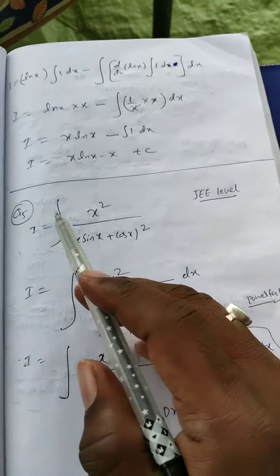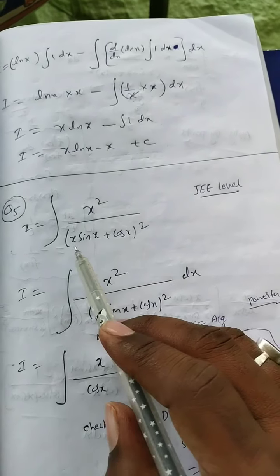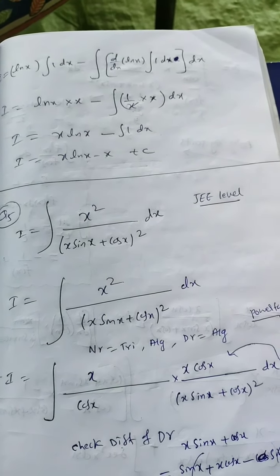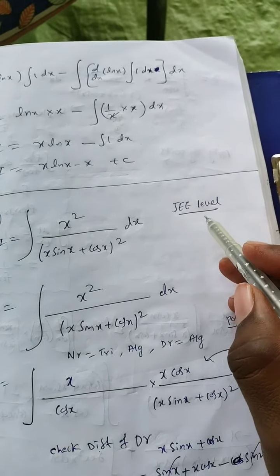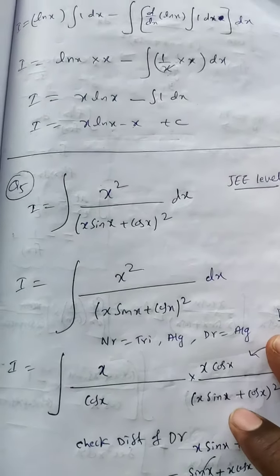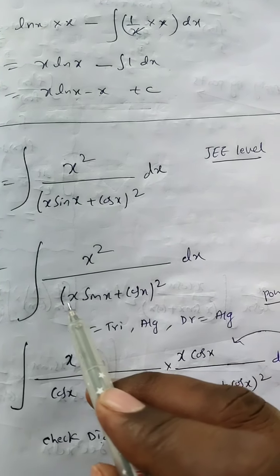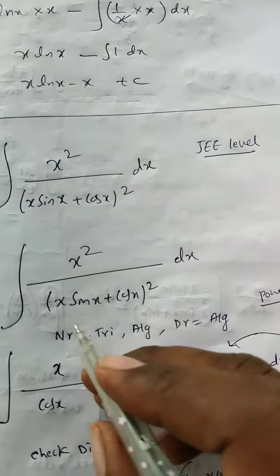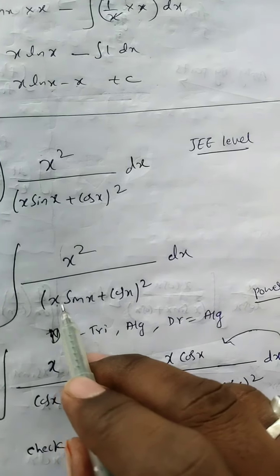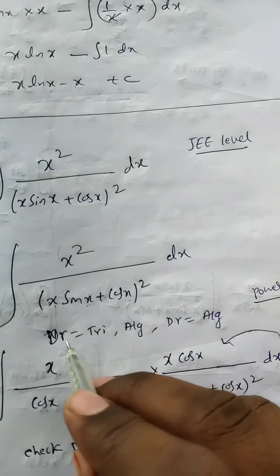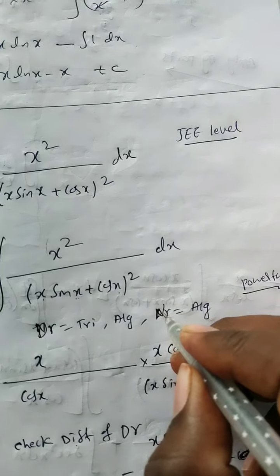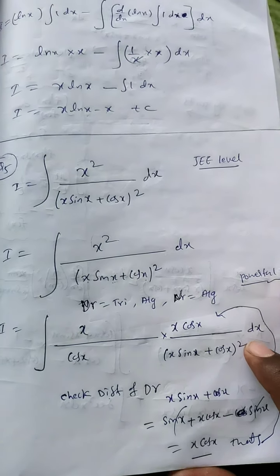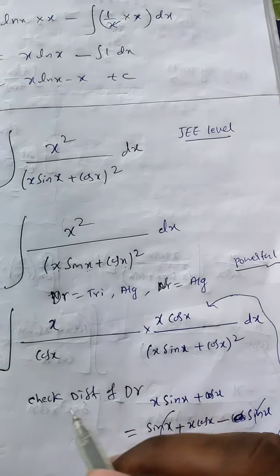Dear students, let us see the next question: I = ∫ x²/(x sin x + cos x)² dx. You have to integrate this. This is a JEE-level question. This is a powerful question because the numerator is algebra and the denominator involves algebra and trigonometry mixed together. You have to find this using integration by parts.